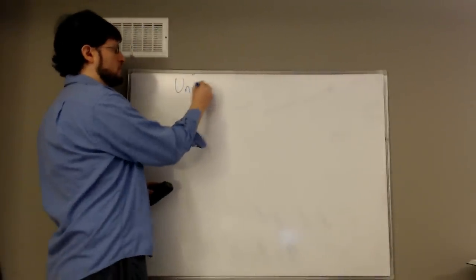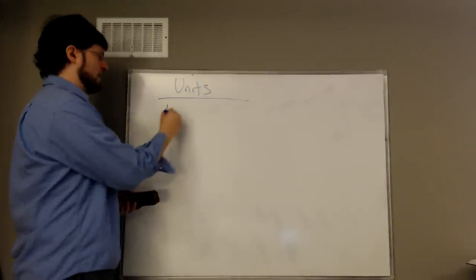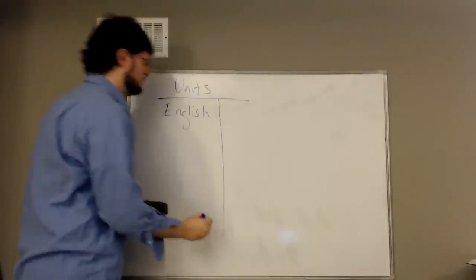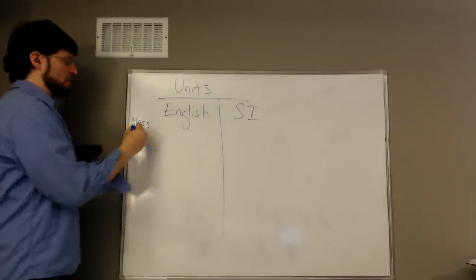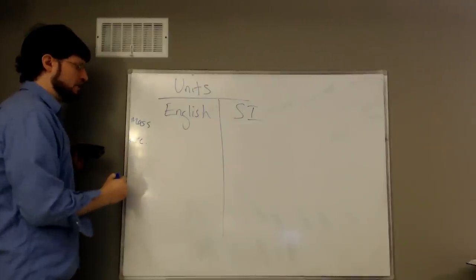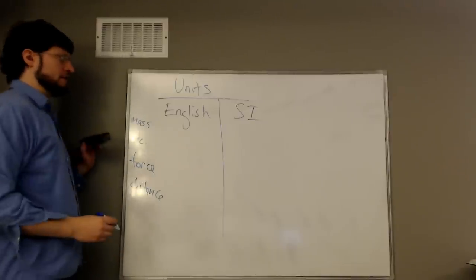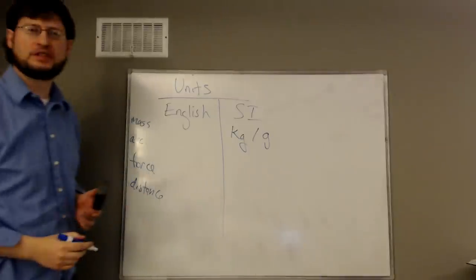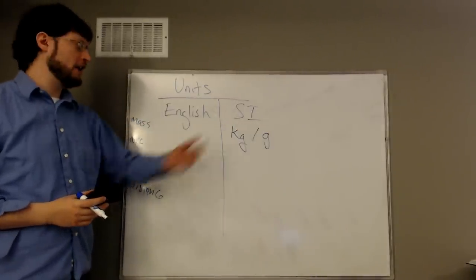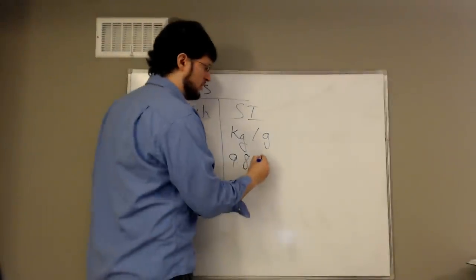Also remember some units — units can play a key role and be a source of confusion. We're going to be looking at two different systems of units: the English system and the international system, often called the SI system. We'll need to talk about mass, acceleration due to gravity, and force. In SI units, mass is kilograms or grams, and acceleration due to gravity is 9.8 meters per second squared.